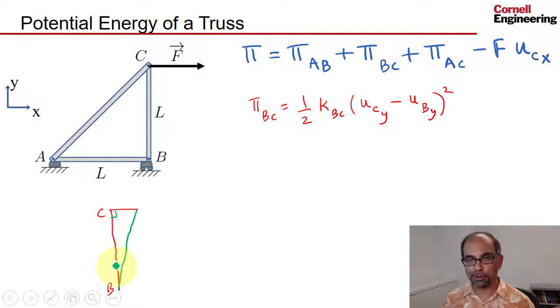You have to squint for these to look like straight lines. Obviously this line is bigger than this, which means BC will actually get extended by a displacement perpendicular to it, but we will ignore that effect. That's the small displacement assumption.